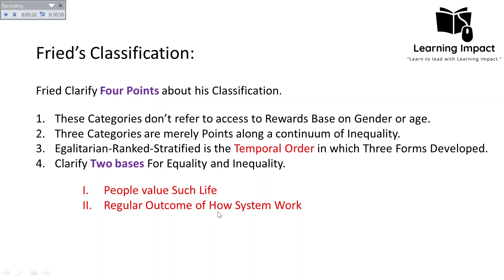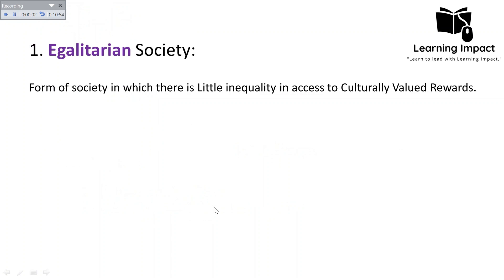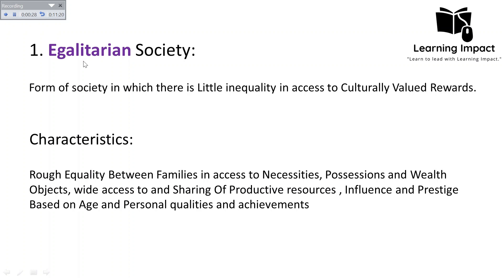Egalitarian society is the form of society in which there is little inequality in access to cultural value rewards — meaning wealth, power, and prestige. It is a form of society with rough equality, in which individuals have mostly equal status. Major characteristics include rough equality between families in access to necessities, equal access to positions of prestige, and the principle of reciprocal sharing — wide access to and sharing of productive resources.